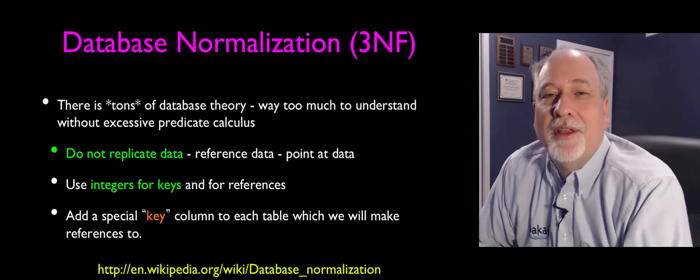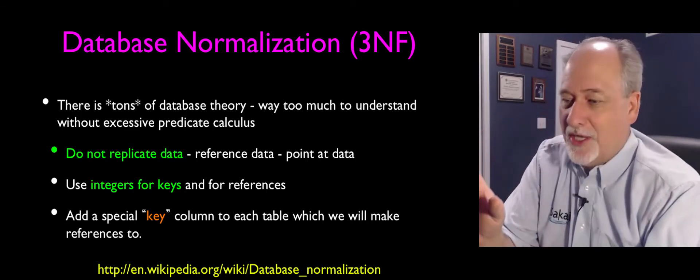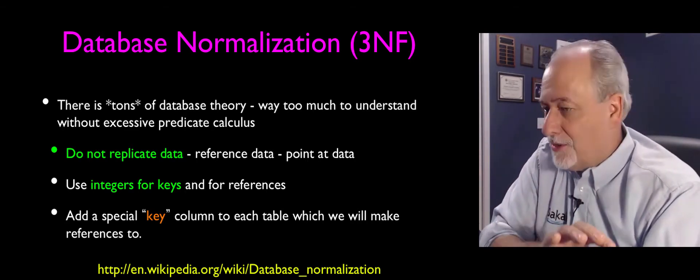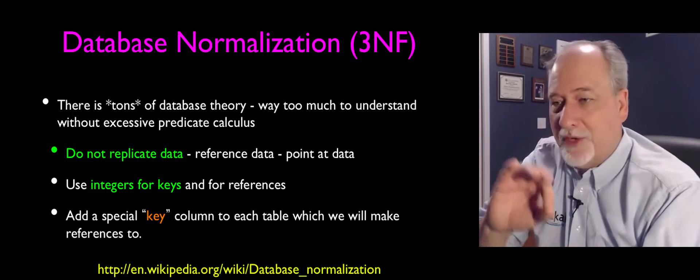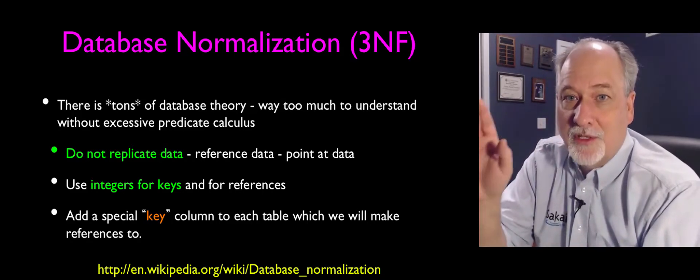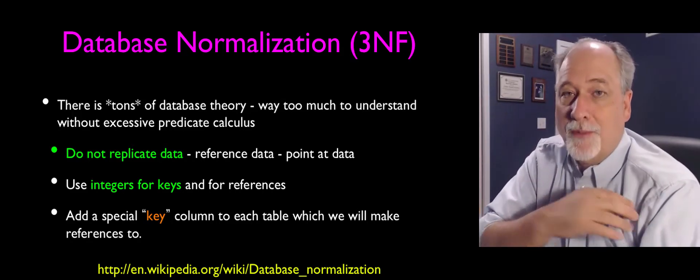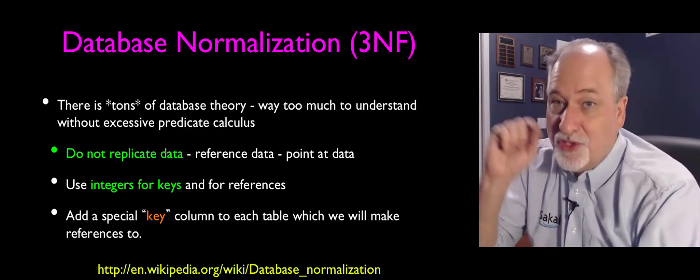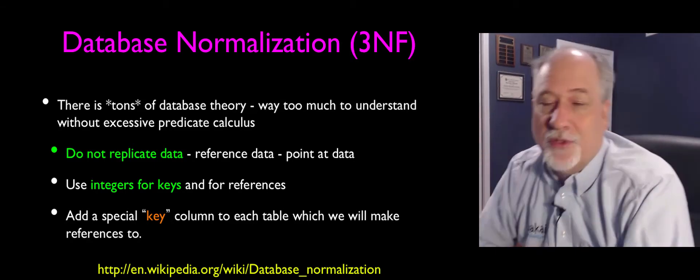The rule is never replicate a string. It's the Charles Severance example. You can have a learning management system with hundreds of tables and billions of records, but the word Charles Severance, as it refers to a particular user, should only appear one place. And what we do is we use numbers to act as proxies for those strings.